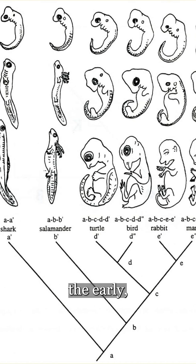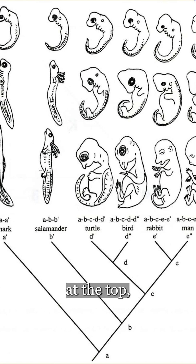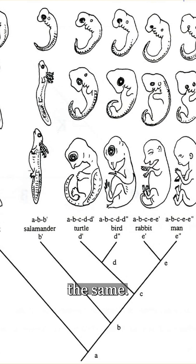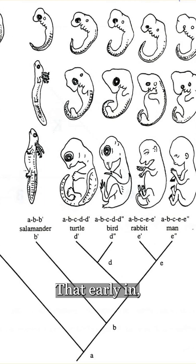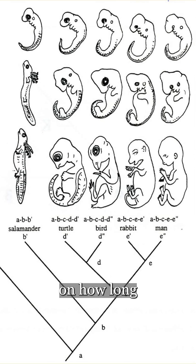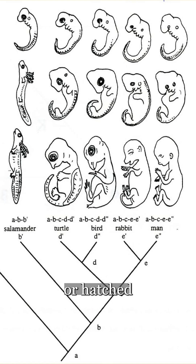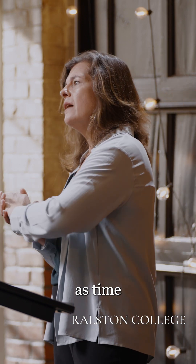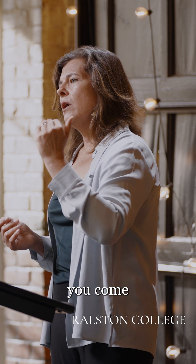But the point is that the early embryos at the top, regardless of which species they are being described for, all kind of look the same. Right after fertilization, and for some amount of time — depending on how long you are before you are born or hatched or whatever — you pretty much look just like a tiny little embryo, at least if you're a vertebrate. Things look different over an invertebrate space. And then as time progresses, you come to look more and more like your future self, and less and less like that vague general plan.